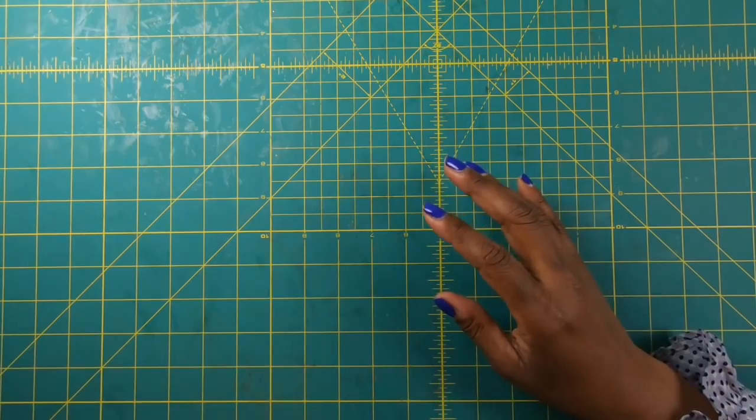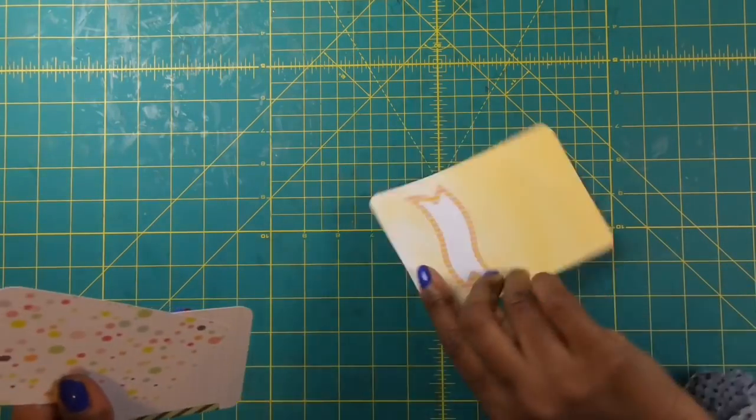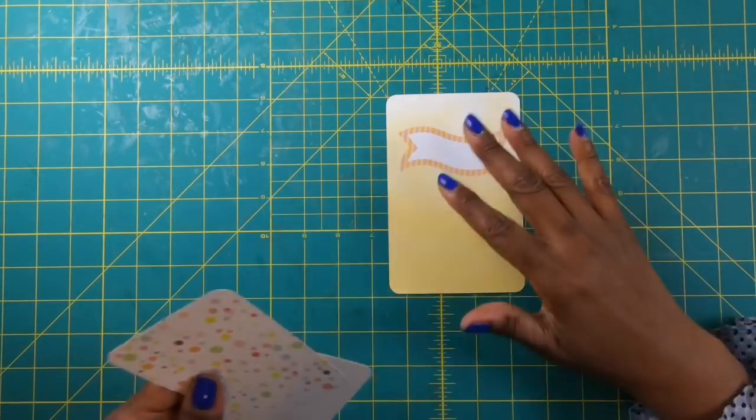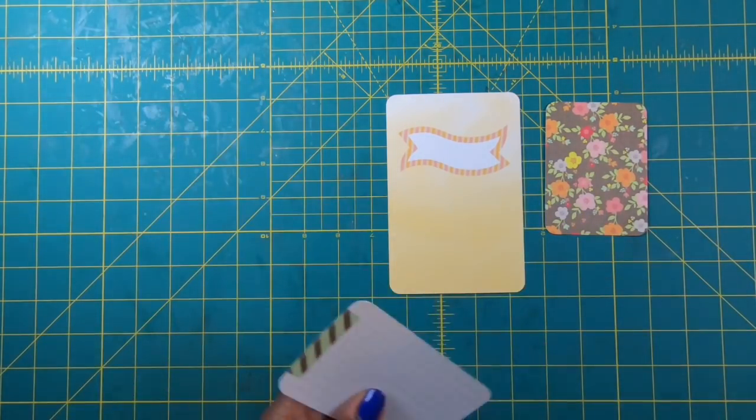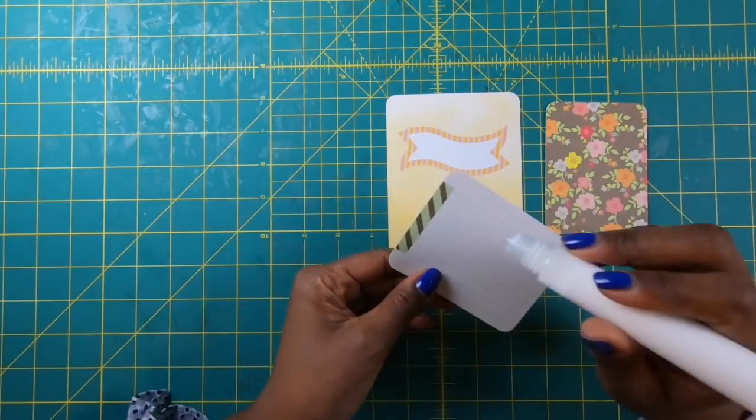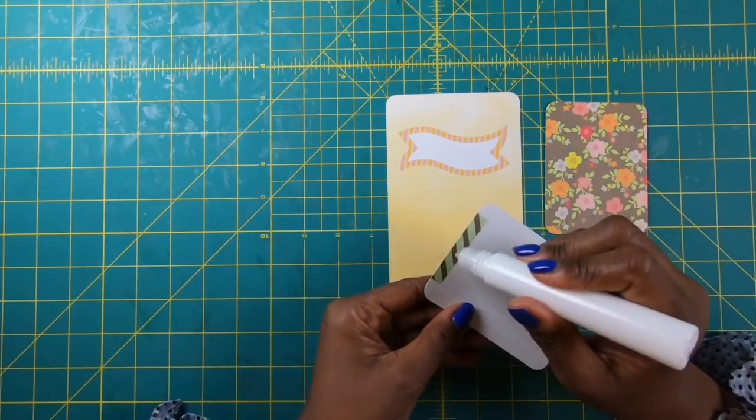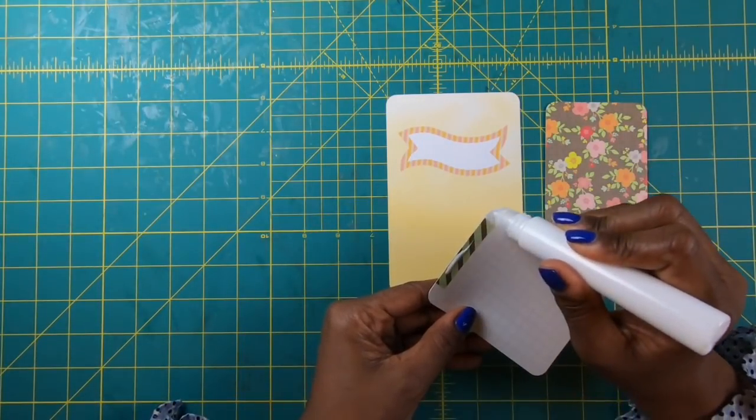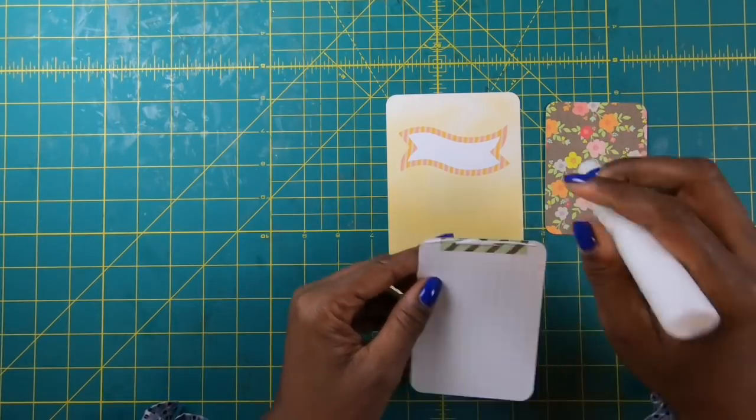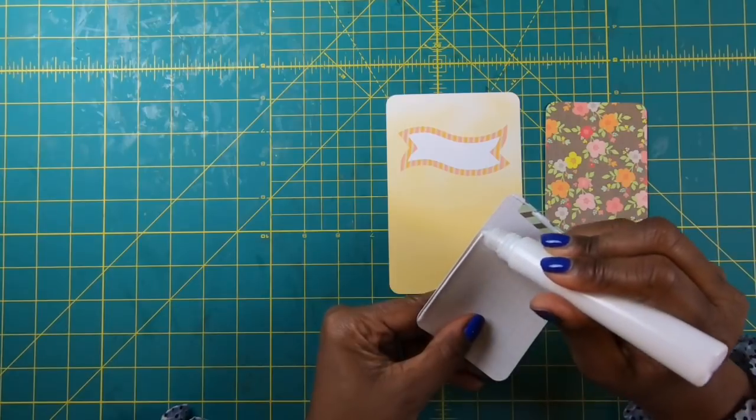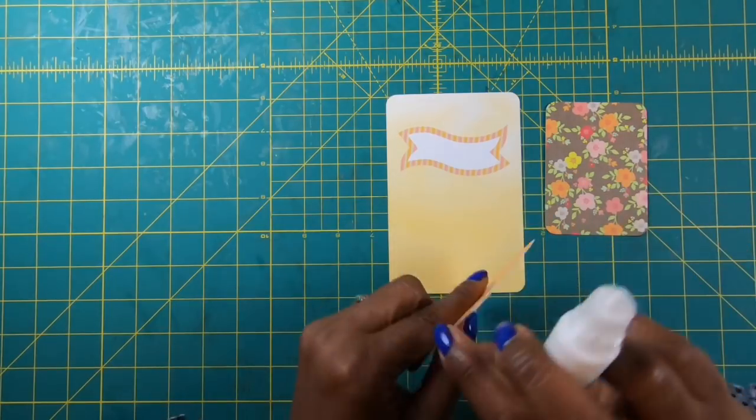So to make this, I am using a Project Life 4x6 and then two of the minis. What I'll be doing is I am going to take some glue and put it on three sides of this card, on the end. I'm going to try not to put too much glue down because I don't want too much. You guys will see just how quick this project will go and I think you're going to like it.